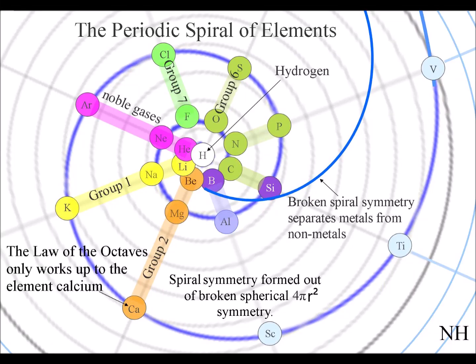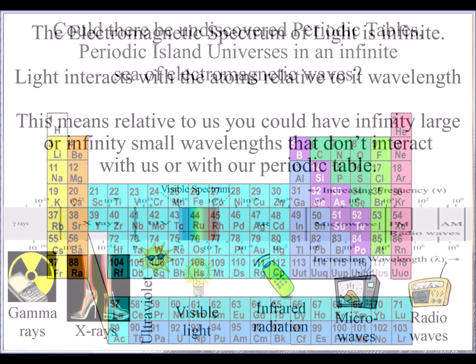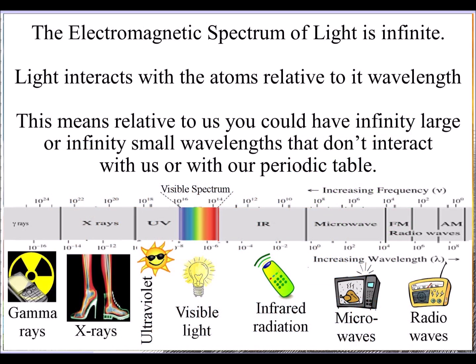Could there be other periodic tables? We have a finite periodic table of atoms that at certain wavelengths interacts with the electromagnetic spectrum of light.